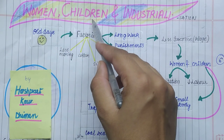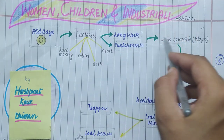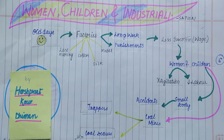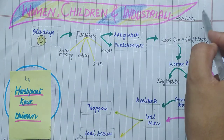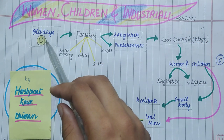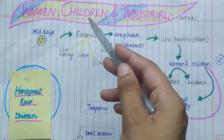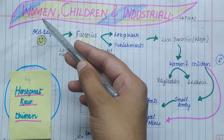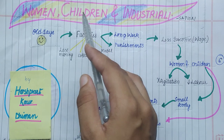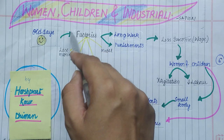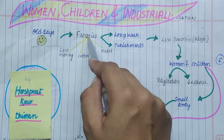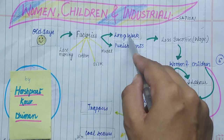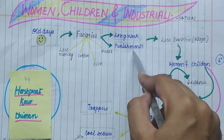Now we will study women, children, and industrialization — what effect did industrialization have on them? Before industrialization, children worked under their parents' supervision in the fields, and women sat at home using spinning wheels and churkas to make yarns. It was a relatively peaceful life. But after industrialization, women and children began working in factories — lace making, cotton industries, silk industries, and metal industries.